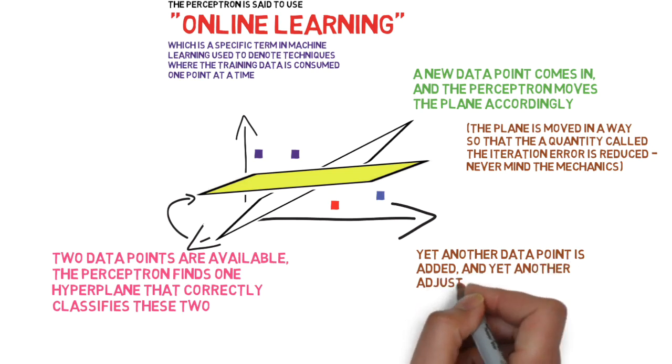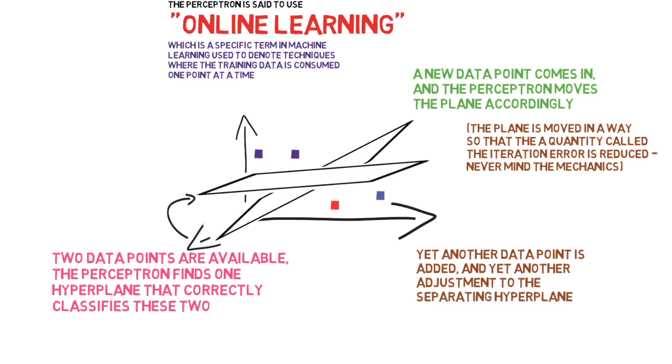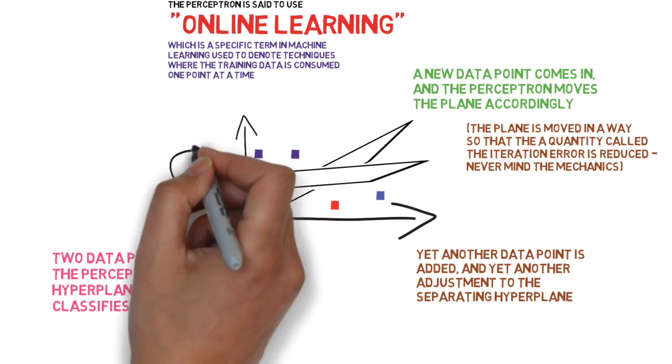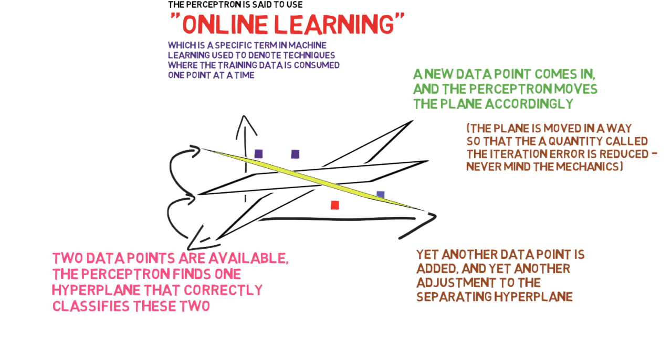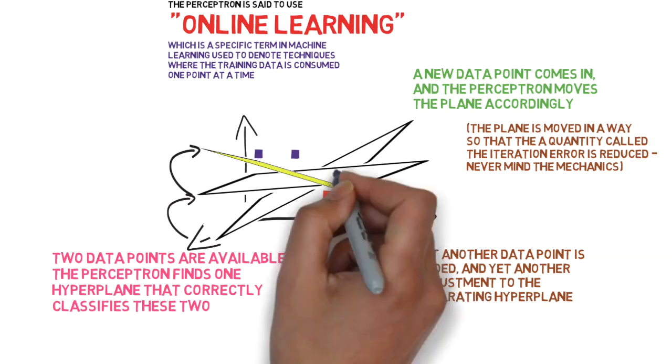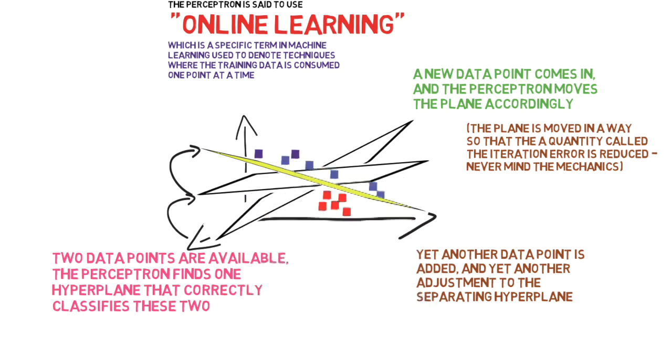So here's the new hyperplane for this set of points. Now, yet another data point comes in. The perceptron again moves the hyperplane so that we can still get a clean separation between the two categories of points. It will keep doing this as it moves through the training data set. As more and more points are added, it keeps moving the hyperplane, just keeping these two clusters of points separated.